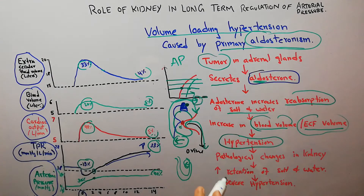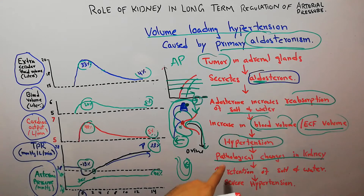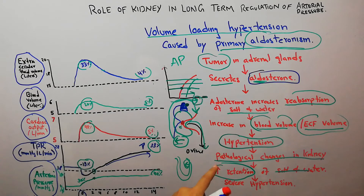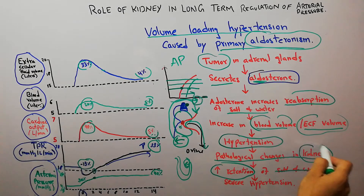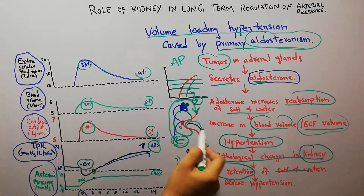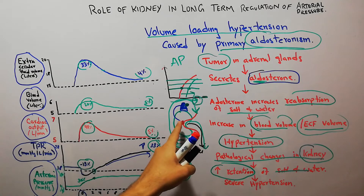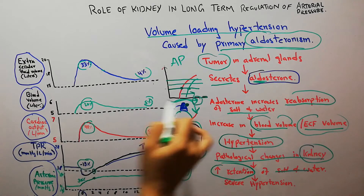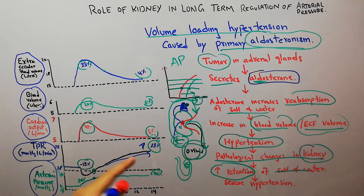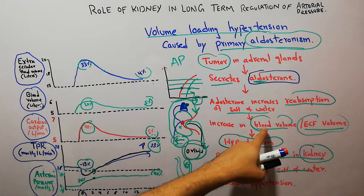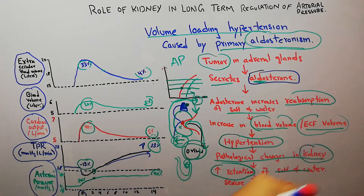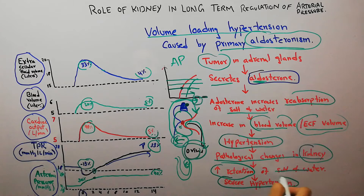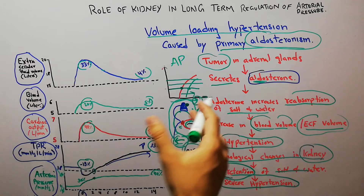In the long run, hypertension in primary aldosteronism leads to pathological changes in the kidney. The kidney itself begins to increase retention of salt and water — independent of aldosterone — reabsorbing more salt and water from the filtrate back into the blood rather than excreting it in urine. This further increases blood volume and extracellular fluid volume, leading to severe or lethal hypertension.